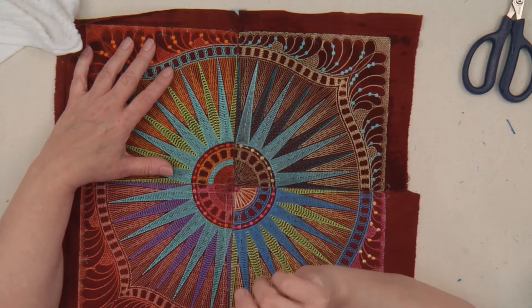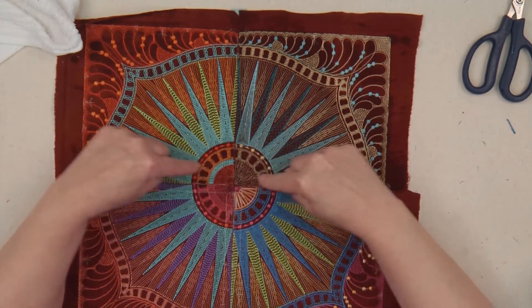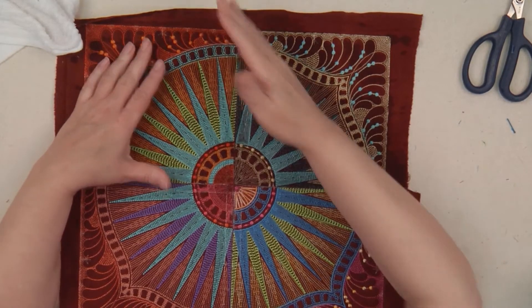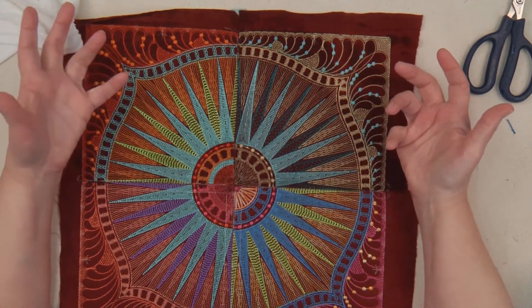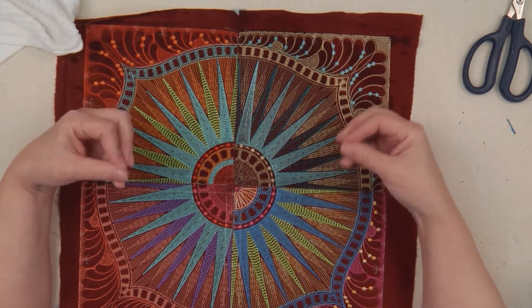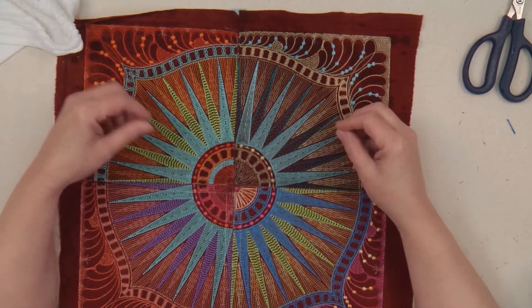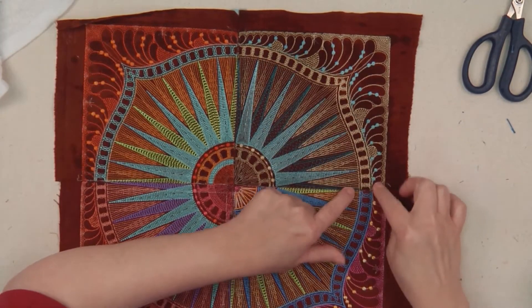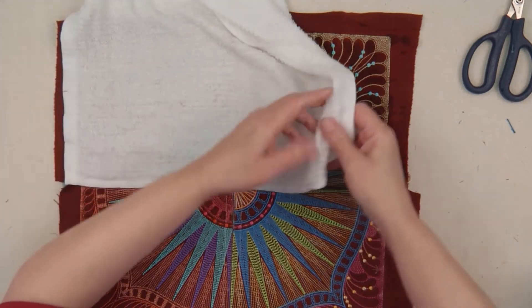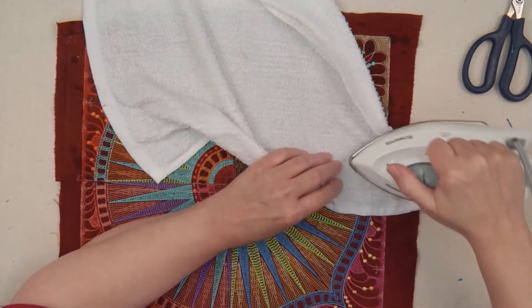You want to do it until the water-soluble thread actually goes away. So it could be two times, but it also could be more than that. In the corners where there's excess, you can go ahead and do it again until the thread goes away.